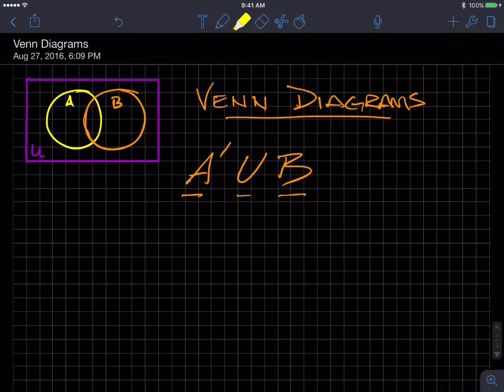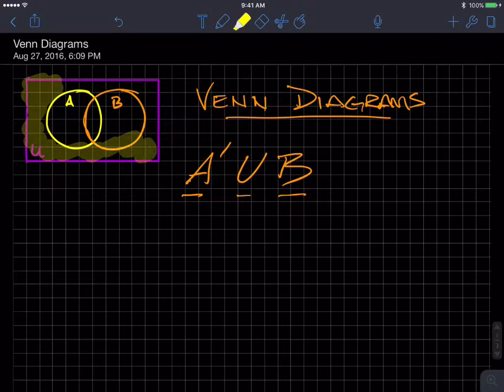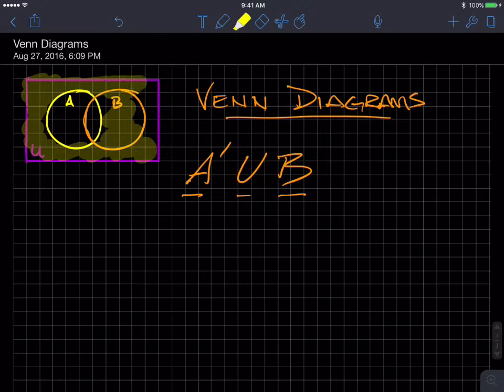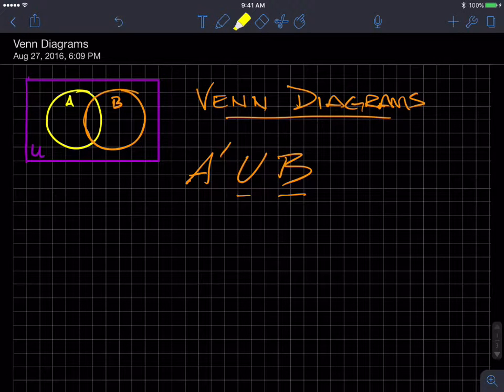Now the complement of A is this, so everything that's not A. And then if I join it with everything that's in B, all I'm doing is adding this part because this was in B. So it's everything except for this moon shape that's left over from A. That one's not too bad.